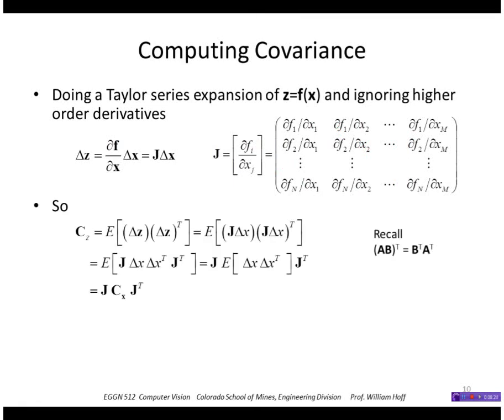So the covariance of z, then, is the expected value of delta z delta z transpose. Plugging in what delta z is, I get j delta x and j delta x transpose. Recall that the transpose of a product of matrices is the product of the transposes, but reversed.